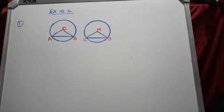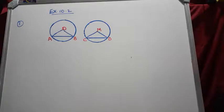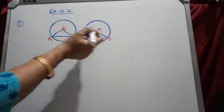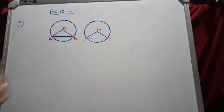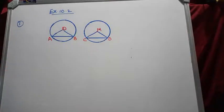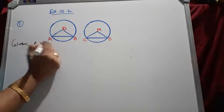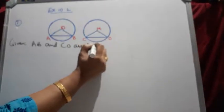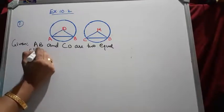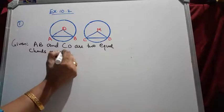The first question of Exercise 10.2 is: recall that two circles are congruent if they have the same radii. Prove that equal chords of congruent circles subtend equal angles at the center. Here you can see two circles with centers O and M. These two circles have the same radii and are congruent circles. AB and CD are two equal chords of these congruent circles.